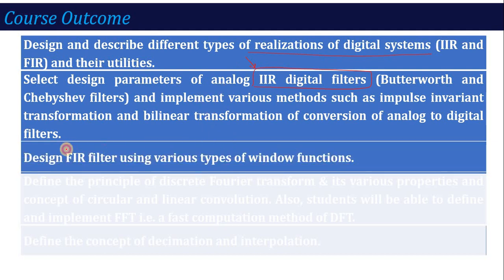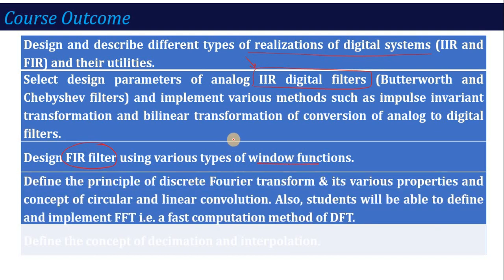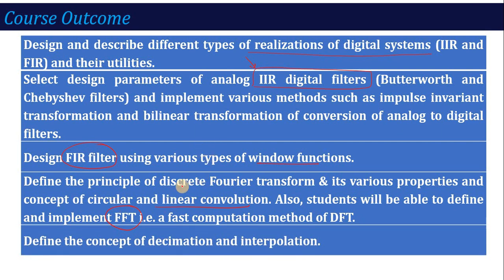After completing Unit 3 you will be able to design FIR filters using the window method — Rectangular, Blackman, Hamming, and other window types. After Unit 4 you will be able to define DFT (Discrete Fourier Transform), understand its properties, calculate circular and linear convolution, implement the FFT algorithm, and explain why FFT is called the 'fast' Fourier transform — how it computes DFT more efficiently. After Unit 5 you will understand decimation and interpolation.